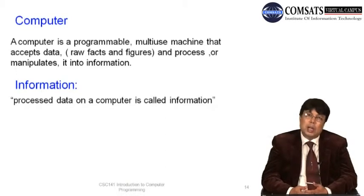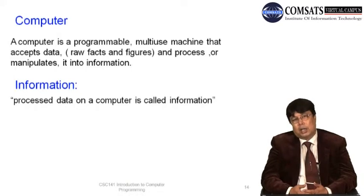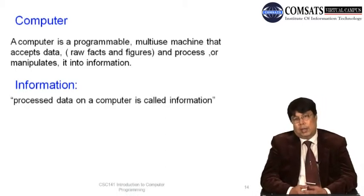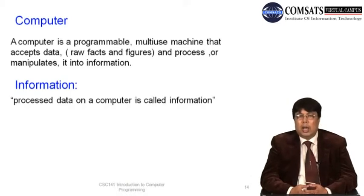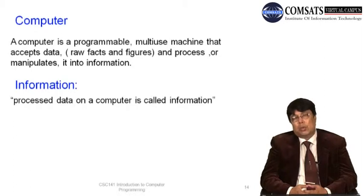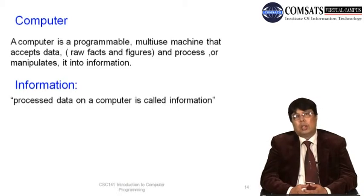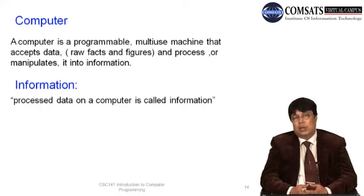Data is basically raw facts — your name, the title of this course, your date of birth are all raw facts. When we process this raw data, for example to find out your age using your date of birth and today's date, that manipulation of data produces information. Processed data on a computer is called information.